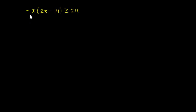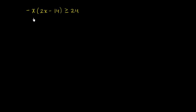We've got the inequality negative x times the expression 2x minus 14 is greater than or equal to 24. I encourage you to pause this video and think about what the solution set to this inequality would actually be, and plot the solution set on a number line. So now let's try to simplify this a little bit.